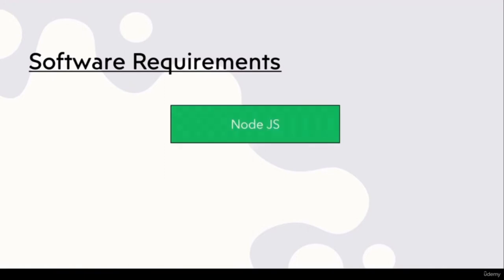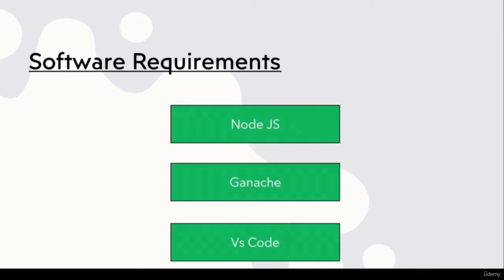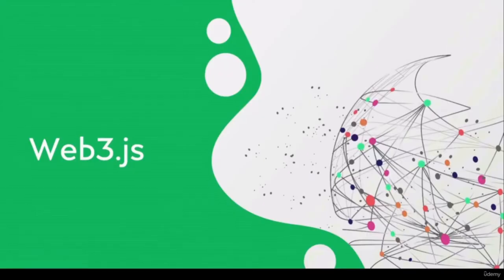Now let us talk about the software requirements — software that you will need on your system before starting this course. The first software you will need is Node.js. With that you should have Ganache and you should also have VS Code. You should know how to install and use these softwares before starting this course.